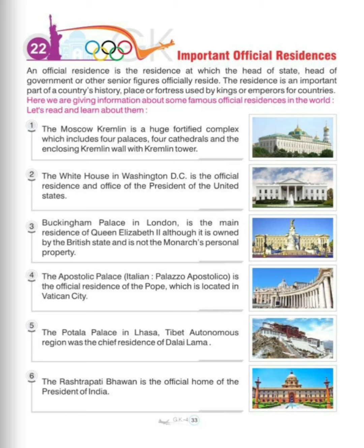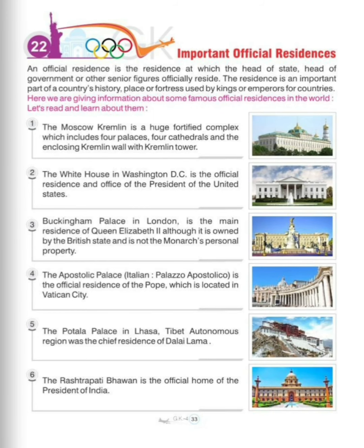Next is Rashtrapati Bhavan. The Rashtrapati Bhavan is the official home of the President of India, located in Delhi. These are some important official residences. We have now completed the chapter. I hope you understand. Thank you.